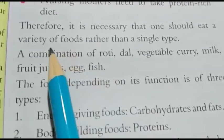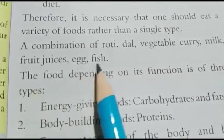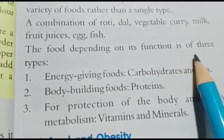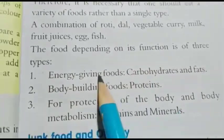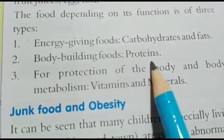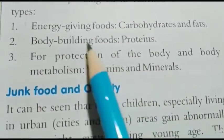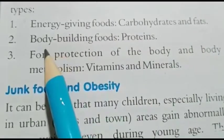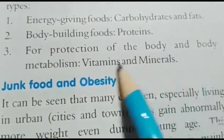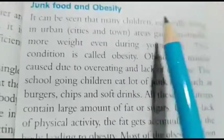A combination of roti, dal, vegetable curry, milk, fruits, juices, egg, and fish — yeh ek combination hota hai food ka jo ki hume continue lete rehna chahiye. Food, depending on its function, is of three types: energy-giving foods such as carbohydrates and fats; body-building foods such as proteins; and for protection of the body and body metabolism — vitamins and minerals.